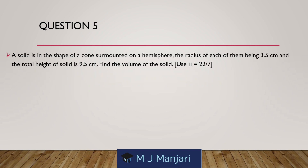Question 5. A solid is in the shape of a cone surmounted on a hemisphere. The radius of each of them being 3.5 cm and the total height of the solid is 9.5 cm. Find the volume of the solid. Use pi is equal to 22 by 7.